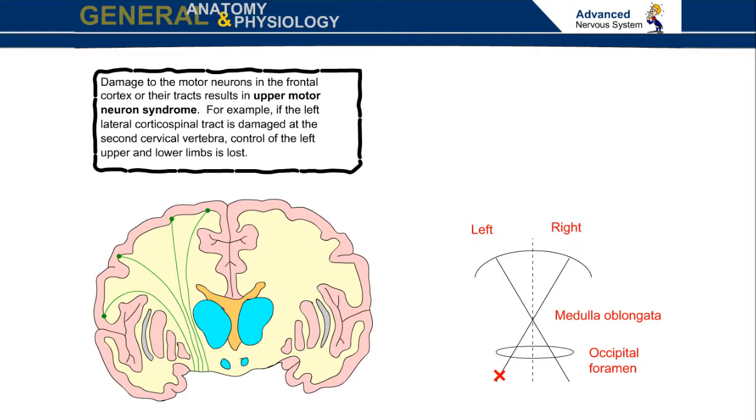For example, if the left lateral corticospinal tract is damaged at the second cervical vertebra, control of the left upper and lower limbs is lost.